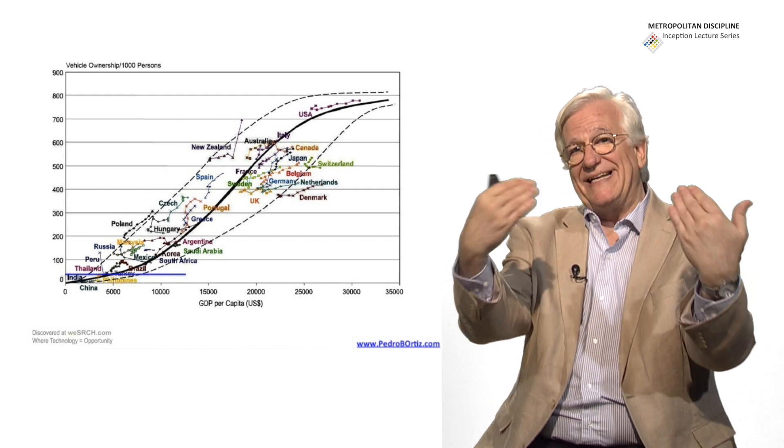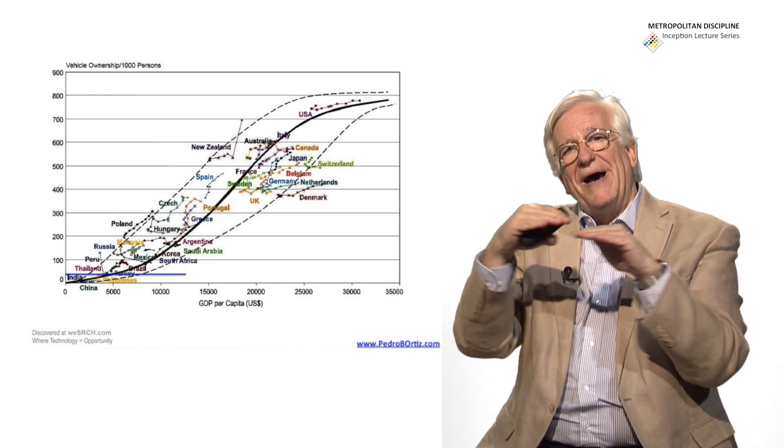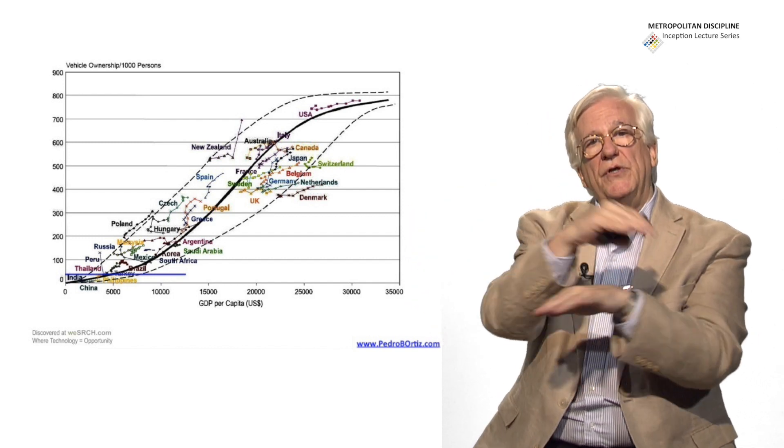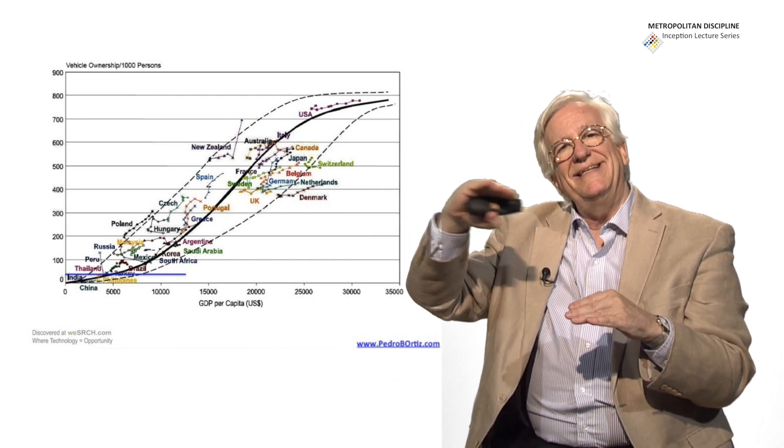When a city reaches that level of 7 or 8 cars per 10 people, people do not buy any more cars. They substitute the old cars by new, but there is not an increase of cars. So there is an asymptote that is the limit.